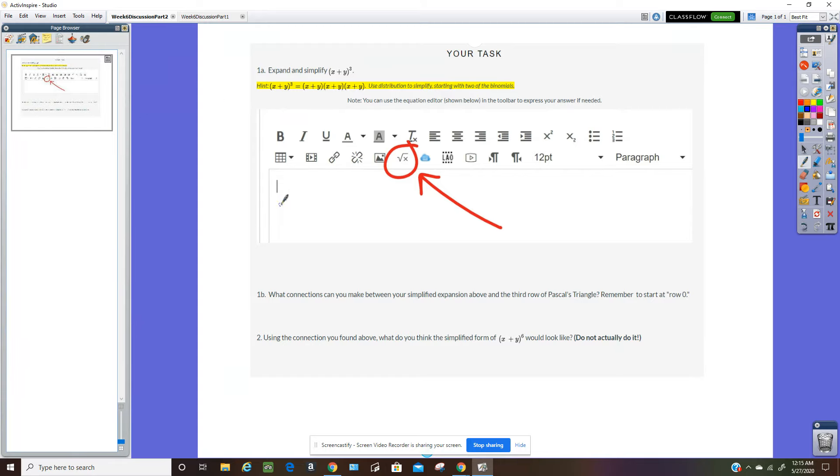Let me write it right here. It means x plus y times x plus y times x plus y. If I multiply these two together, I get x squared plus xy plus xy plus y squared and I'm multiplying that by x plus y.